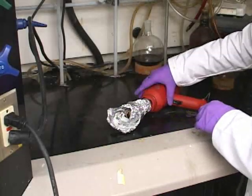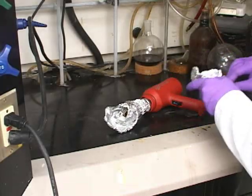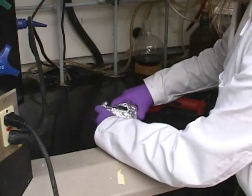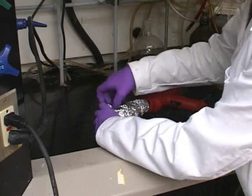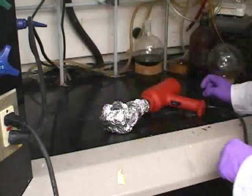Be sure to leave a small opening in the foil so that you can watch the slides for color change as they anneal. Turn the hot air gun on high or to 450 degrees Celsius. Let heat for 30 minutes.